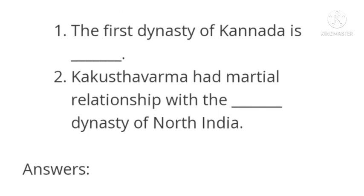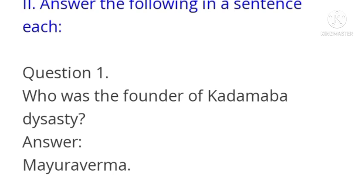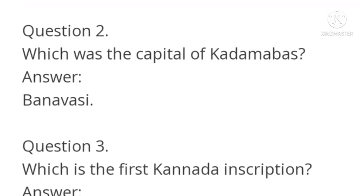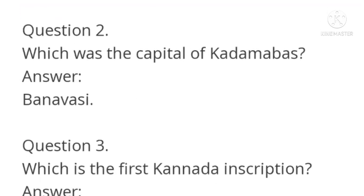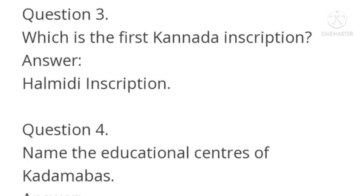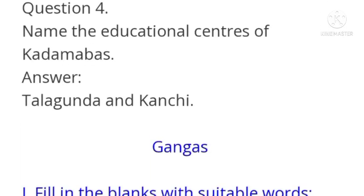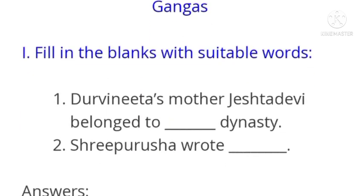Next is the Kadambas section. Fill in the blanks: Number 1: The first dynasty of Karnata is Kadamba. Number 2: Kakusta Varma had a marital relationship with the Gupta dynasty of North India. Answer the following in a sentence: Question 1: Who was the founder of the Kadamba dynasty? Answer: Mayura Varma. Question 2: Which was the capital of Kadambas? Answer: Banavasi. Question 3: Which is the first Karnata inscription? Answer: Halmidi inscription. Question 4: Name educational centers of Kadambas. Answer: Talagunda and Kanchi.